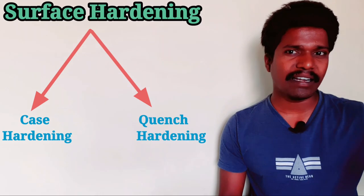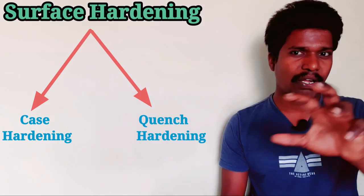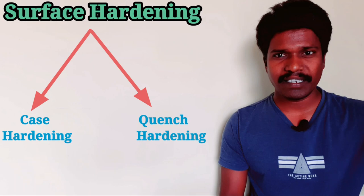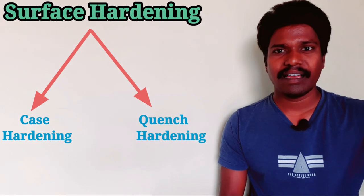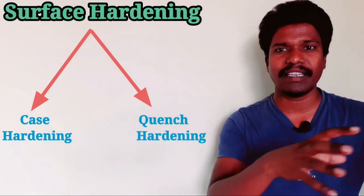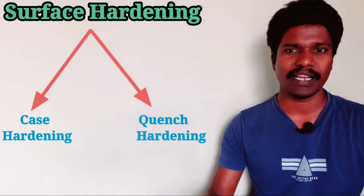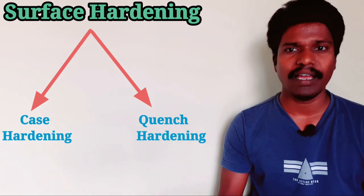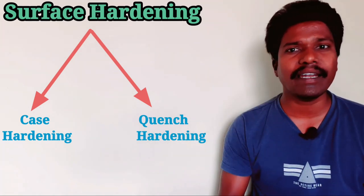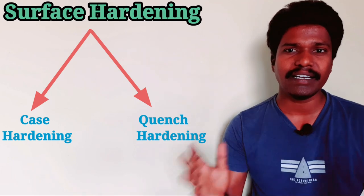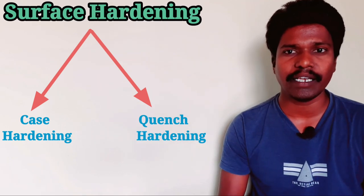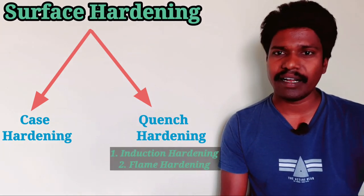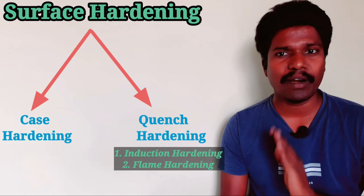In this video, we will discuss in detail how to carry out surface hardening. Quench hardening has two types: one is induction hardening, and two is flame hardening. These are heating methods.